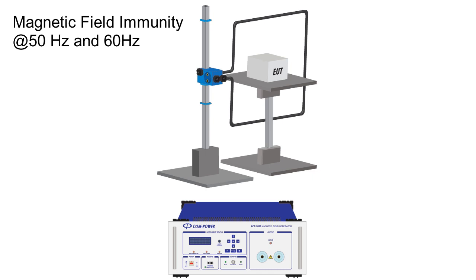Magnetic Field Immunity Test. Some product standards call for magnetic field immunity testing. The most common type is called a C-Power line, meaning the magnetic field generating transducer will be driven with a 50 or 60 Hz signal to simulate the AC power supply.